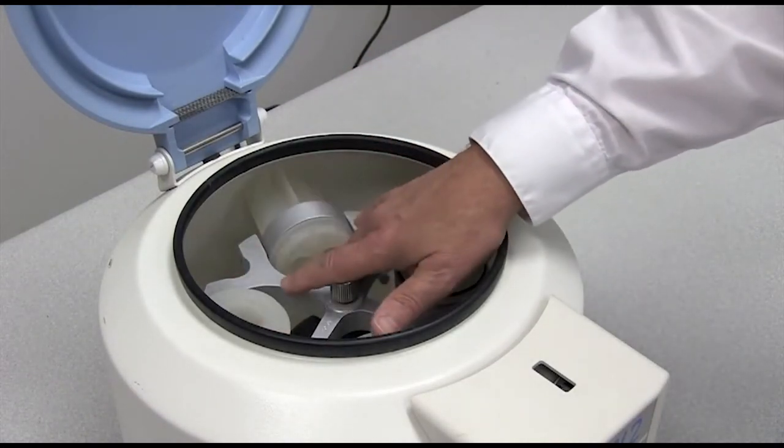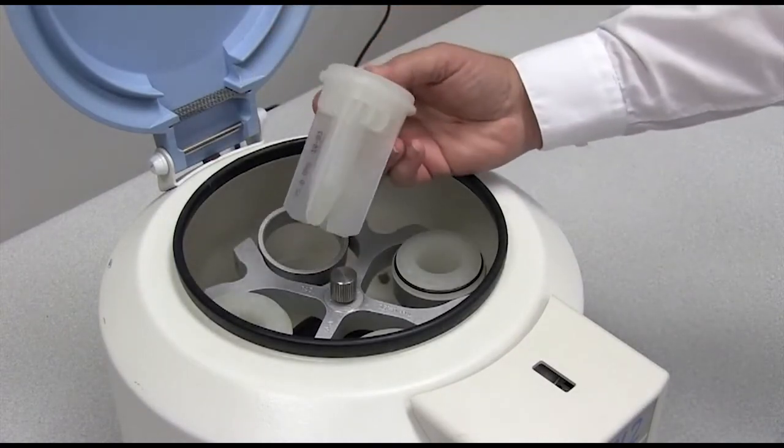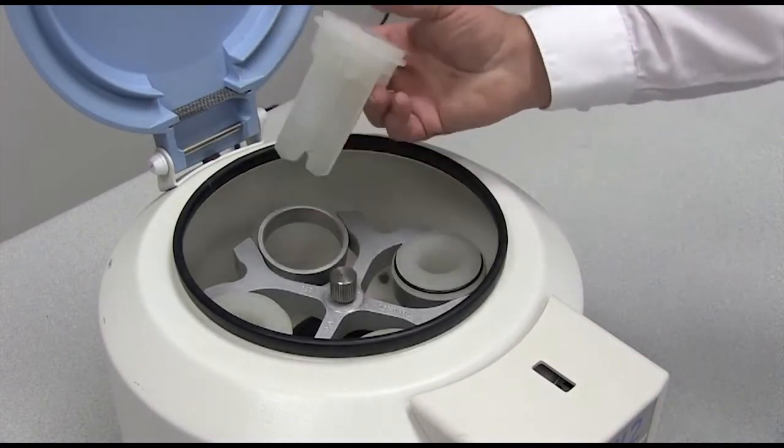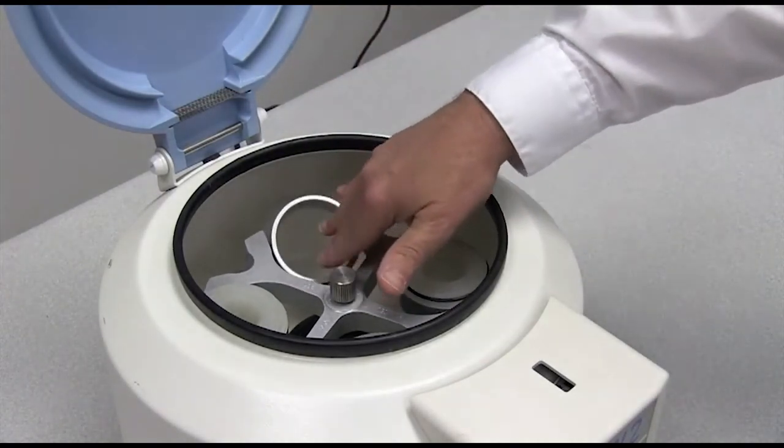This, as you can see, is a swinging bucket rotor so that these swing. They have the removable buckets or tube carriers that fit into these rings. We call these rings trunnion rings.